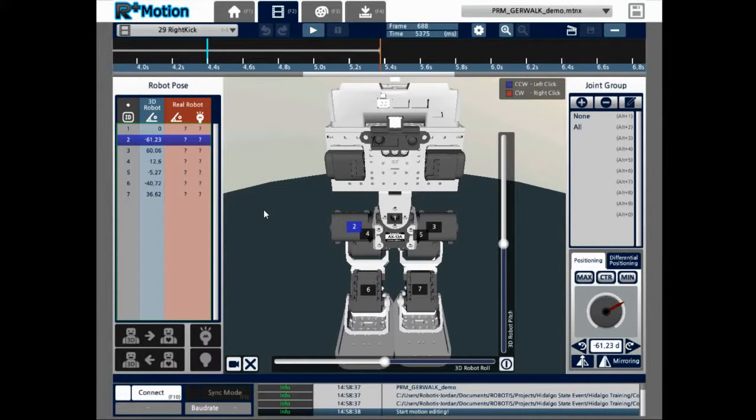What you just simply need to do now is download the task or the motion file called premium GerWalk demo. It will have underscores in between the words.